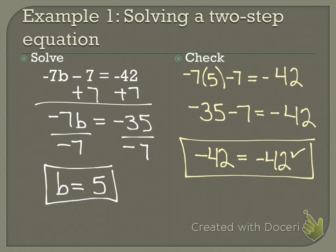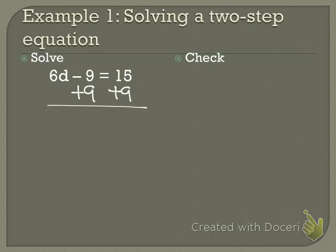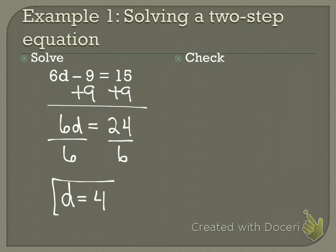We're going to do one more. I'd like to see more people get this one right. So you do this one on your own: 6d minus 9 equals 15. I'm going to add 9 to both sides. Now what's my new equation? 6d equals 24. Now what do I do to solve for d? Divide both sides by 6. And d equals 4. Who got it right? Awesome, good job.